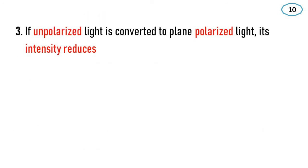Third point: if unpolarized light is converted to plane polarized light, its intensity reduces. Unpolarized light oscillates in different directions — that means more light waves. When converted to plane polarized light, only oscillations in one plane remain. If light waves are in different planes and we restrict them to one plane, the intensity is reduced.